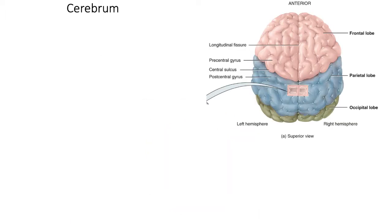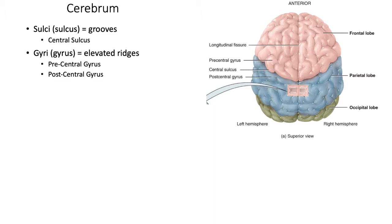The Cerebrum is the most conspicuous part of the brain and makes up about 90% of the mass of the brain. This is also where the centers that control speaking, memory, calculations, imagination, and planning are kept. On the surface of the Cerebrum, you can see ridges and grooves. The grooves are called sulci, and the most prominent sulcus is the central sulcus, which separates the frontal lobe from the parietal lobe.